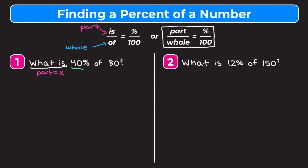The problem gave us the percent, so 40% is the percent part of our proportion. It says 'of 80,' so 80 is associated with the word 'of' and that is going to be our whole. Now we just plug these into our proportion: X over 80 is equal to 40 over 100.